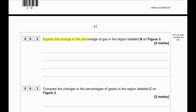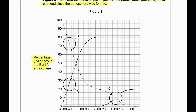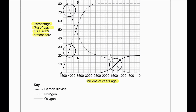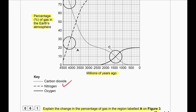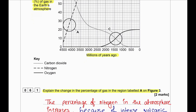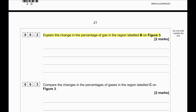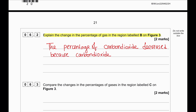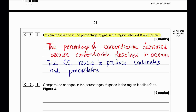Explain the change in percentage of gas in the region labeled B on figure 3. In region B, we can see that the percentage of carbon dioxide is decreasing. This is because carbon dioxide dissolved in the ocean water and formed carbonates and sediments.